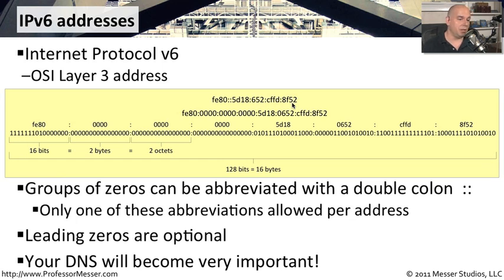And another thing that you can do is also get rid of any leading zeros. If anything starts with a zero, you can simply drop it. So you can see this particular set of two bytes, the 0652, can be abbreviated to 652 in its little section.